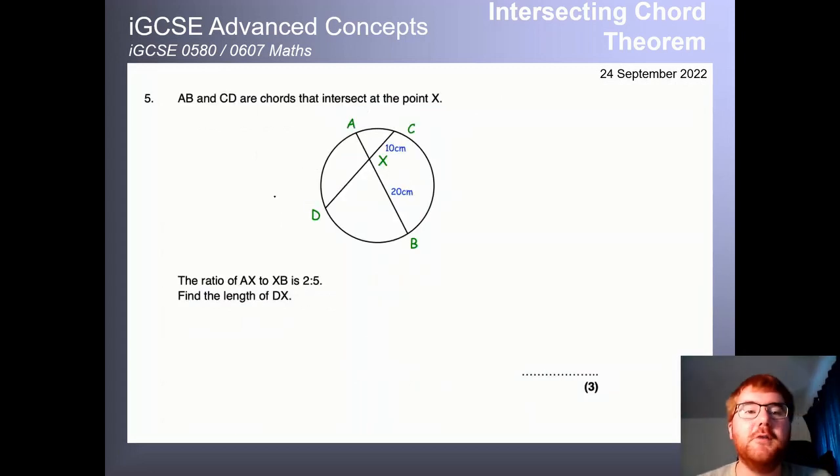And on to question five here. So AB and CD are chords to intersect at the point X. And this time it's a little bit tricky, a bit of ratio here. The ratio of AX to XB is the ratio two to five. The way I generally set this up is then I put in the information I have. Well, XB in the question is equal to 20. Here, I don't know what that is yet.